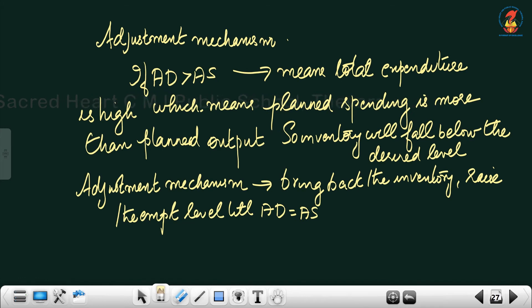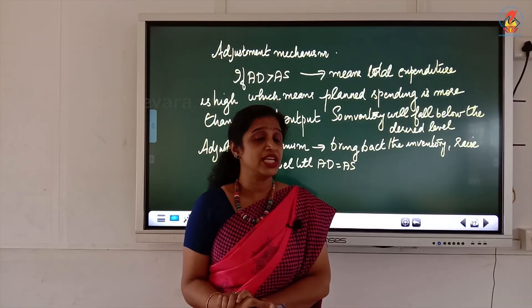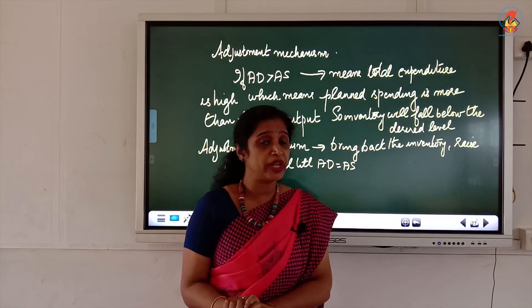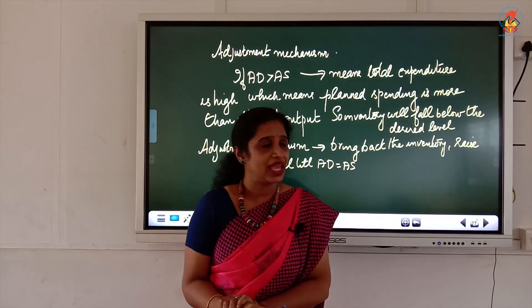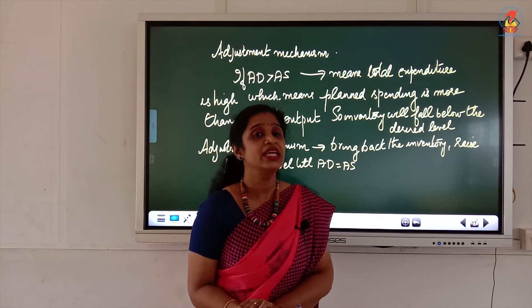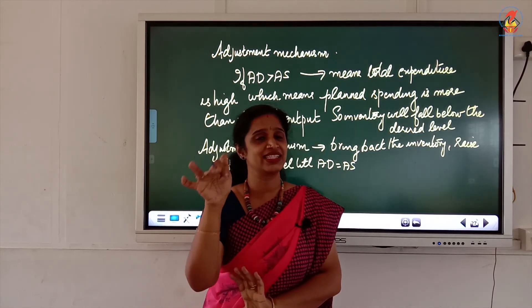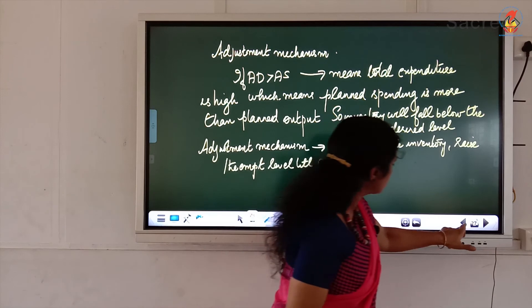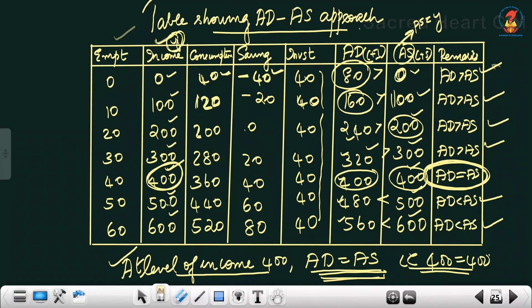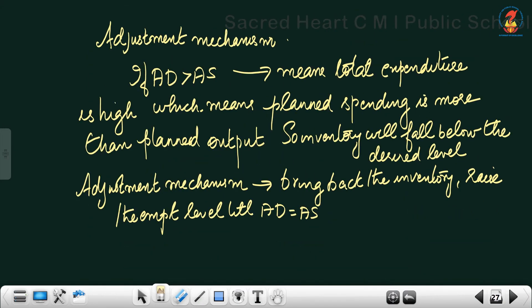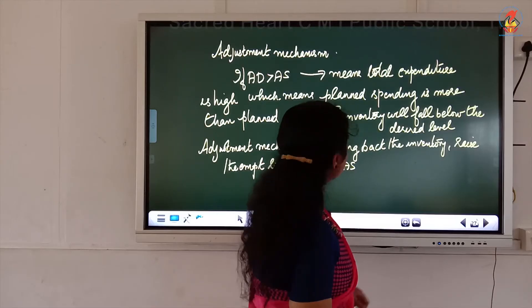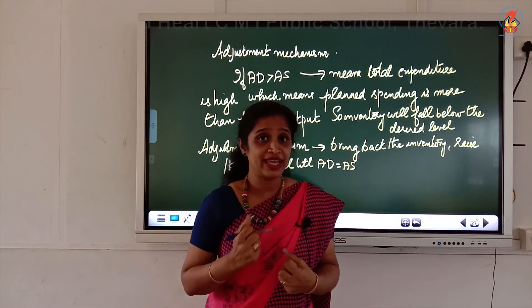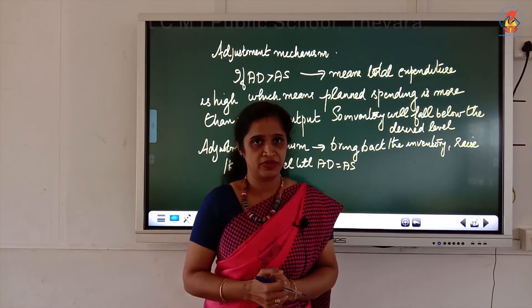Next is the adjustment mechanism. We have learned that equilibrium is achieved where AD equals AS. But what happens if AD is greater than AS, or AD is less than AS? Let us see how the economy adjusts in each of those situations.